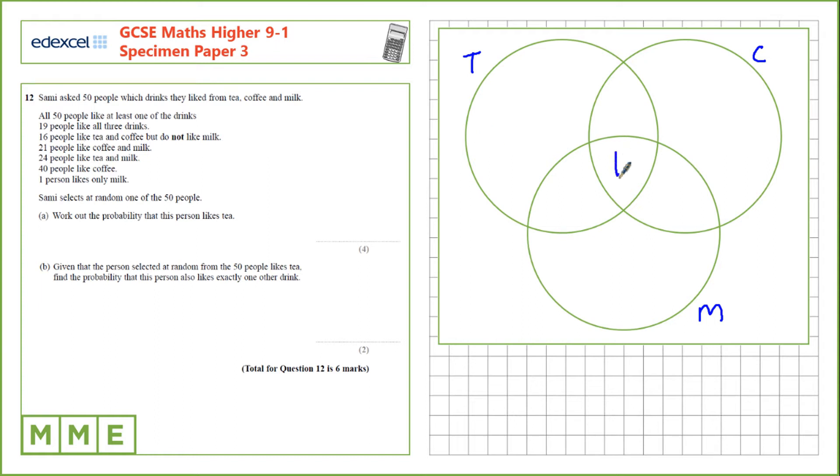19 people like all three drinks, we'll put them here. 16 people like tea and coffee but do not like milk, so these are the people that like tea and coffee and these people like milk, so that's 16 to go here.